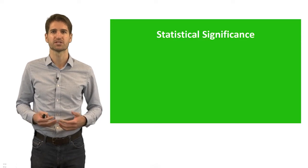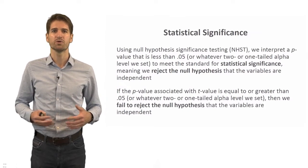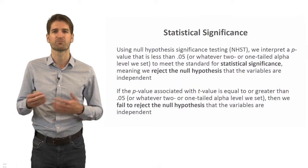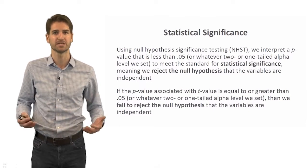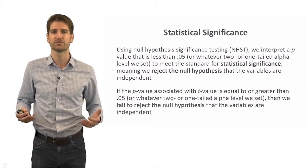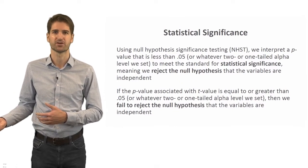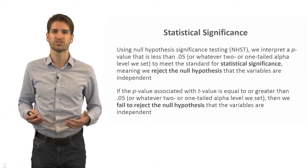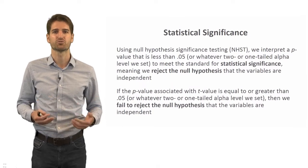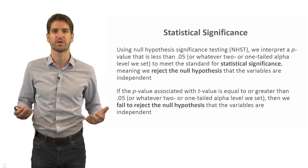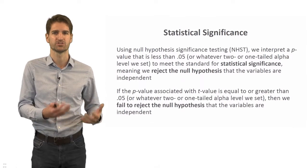Using null hypothesis significance testing, we interpret a p-value less than 0.05 — or whatever alpha we set — as meeting the standard for statistical significance, meaning we reject the null hypothesis that the variables are independent. We conclude there is some association between them. If the p-value is equal to or greater than 0.05, we fail to reject the null hypothesis, concluding the variables are not contingent upon each other and there is no association.